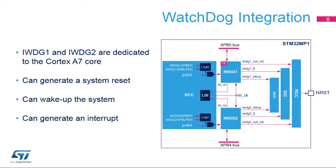IWDG1 is Trust Zone Aware and is connected to the secure APB5 bus. The enabling of the APB clock is controlled by the RCC block. The APB clock is needed to refresh and to configure the watchdog. The wake-up signals are connected to the EXTI block, allowing the system to exit from stop mode when an early interrupt is generated.